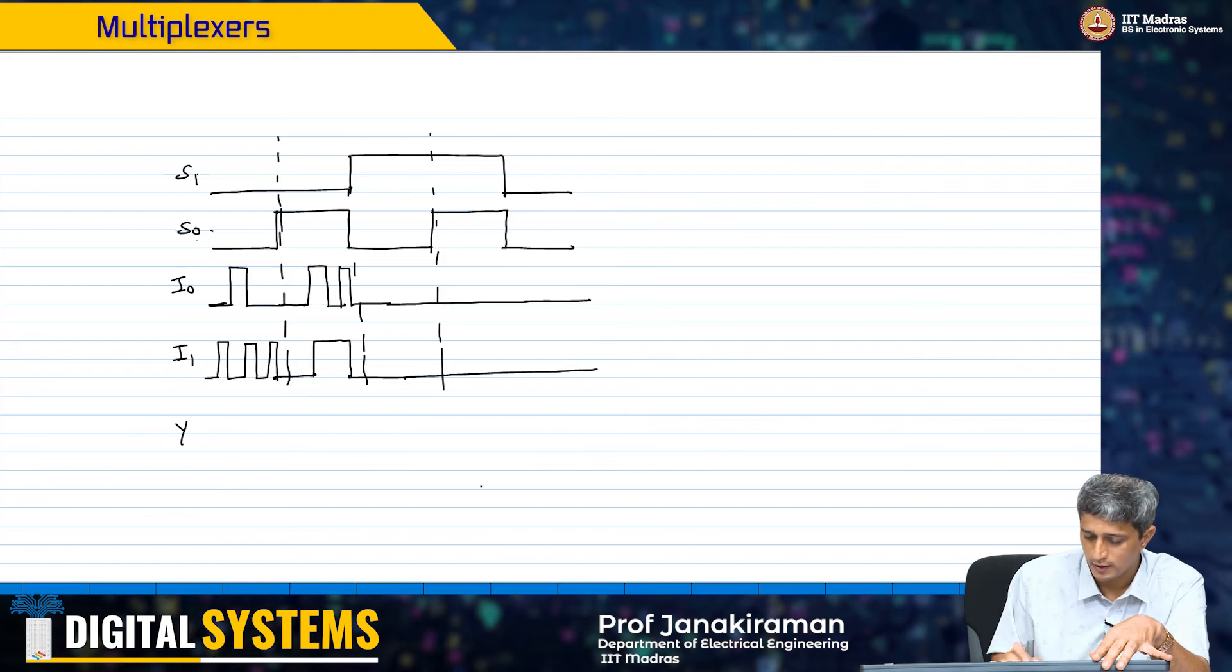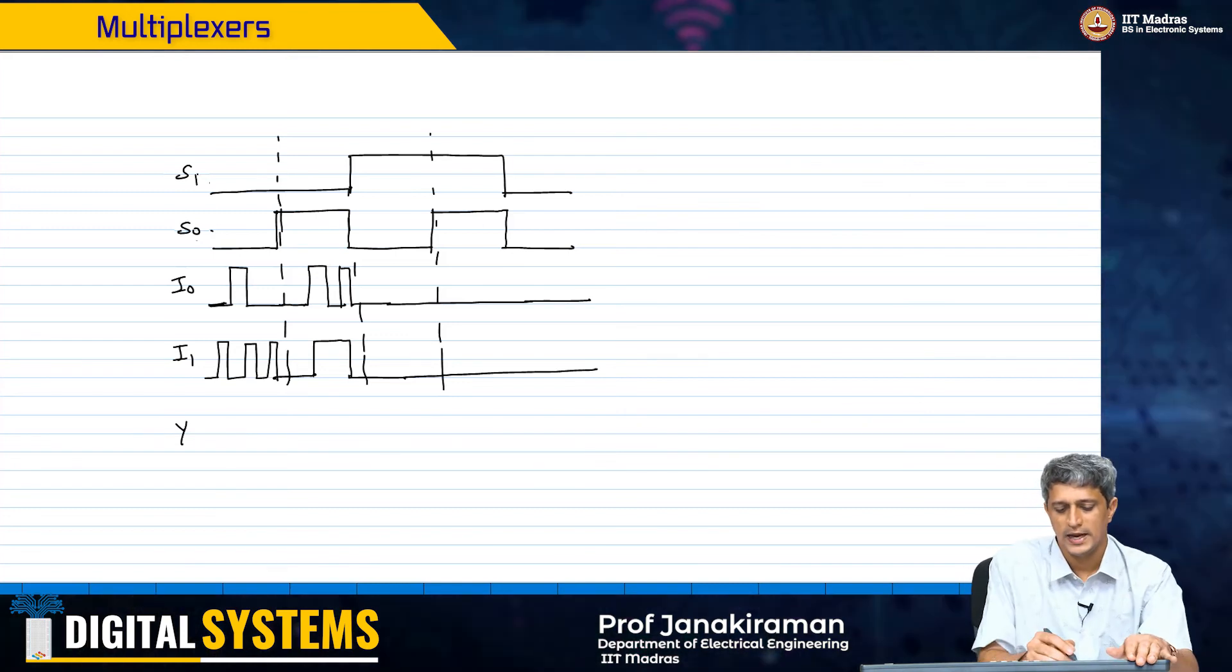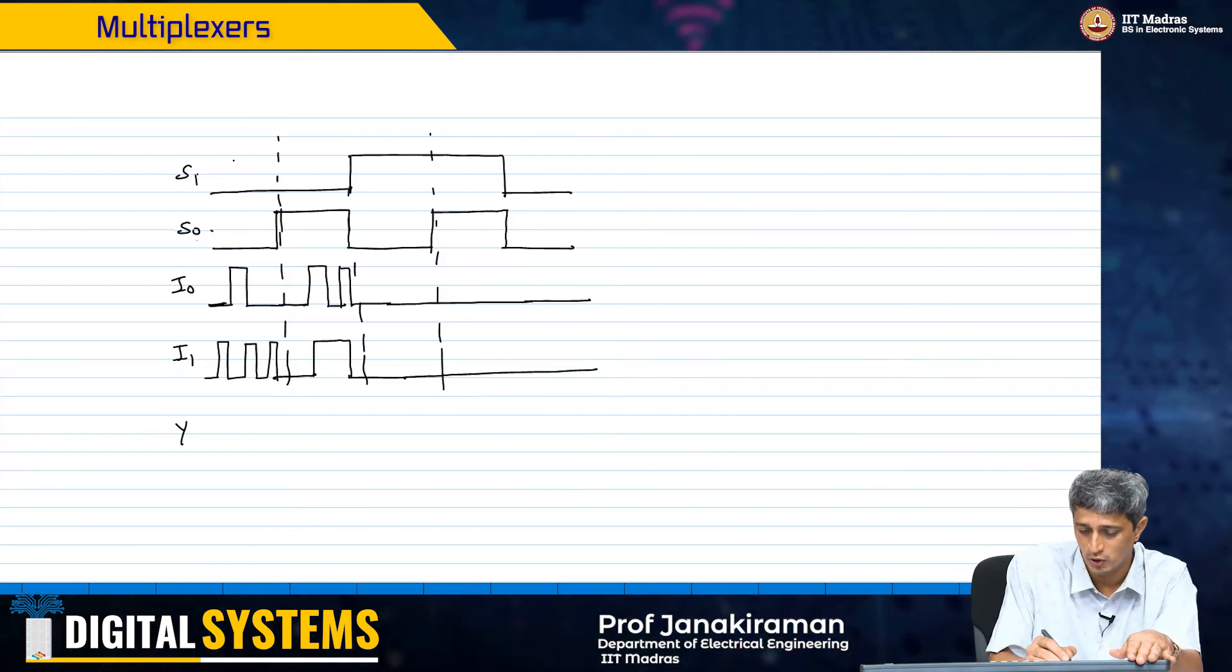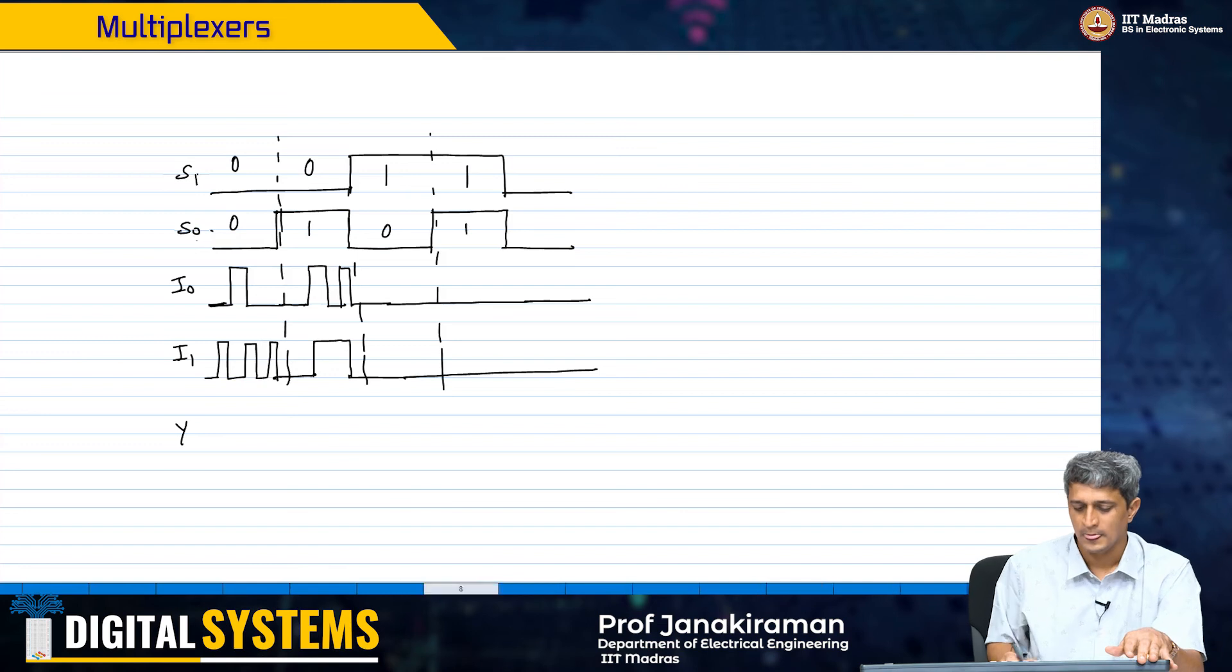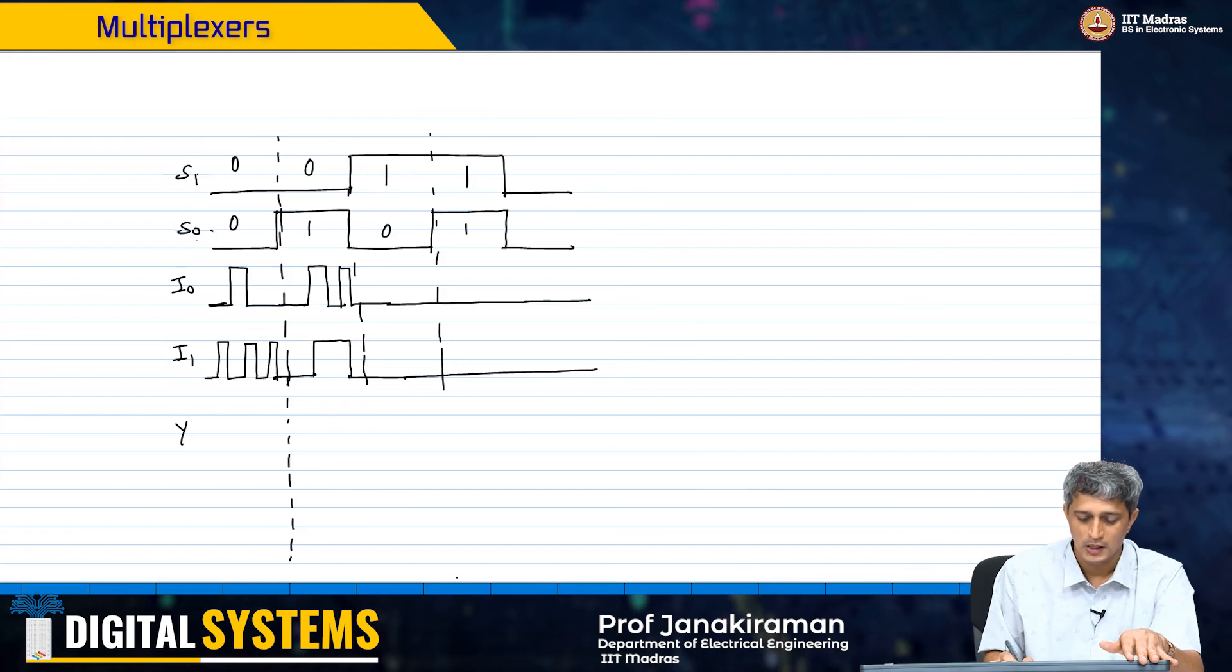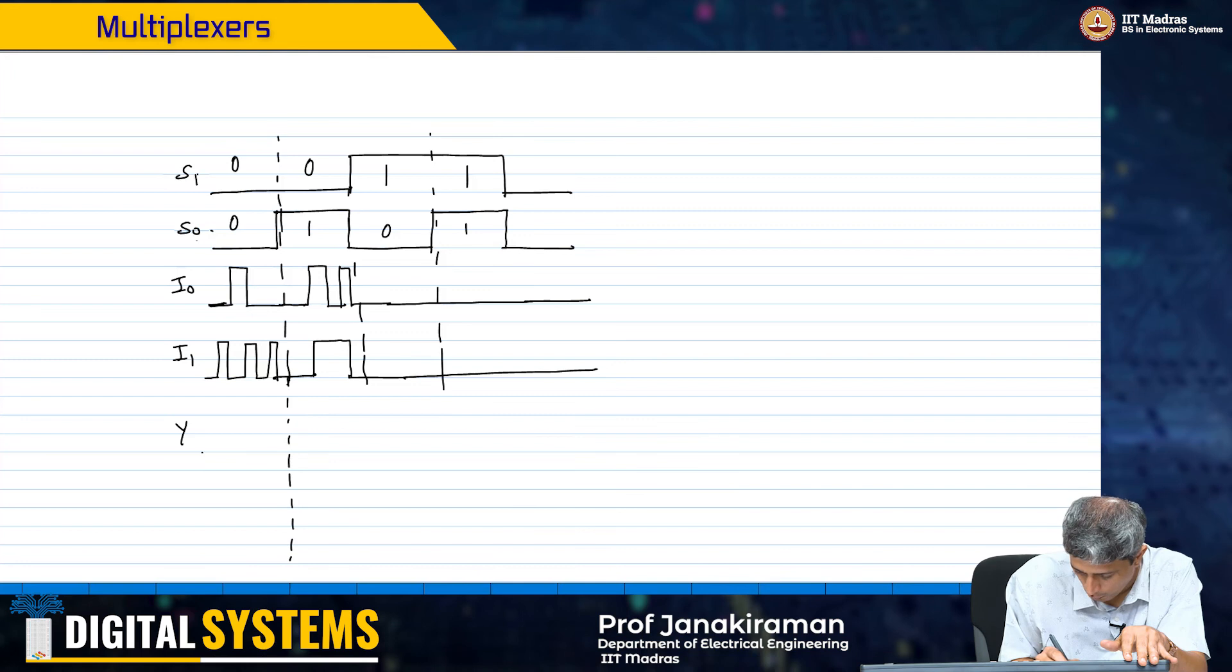Then my output y of this multiplexer, if s0 and s1 were 0 0, this is 0 0, 0 1, 1 0, 1 1. As long as s1 and s0 are 0 0, the output will just follow i0. Therefore, y will simply follow i0 here.